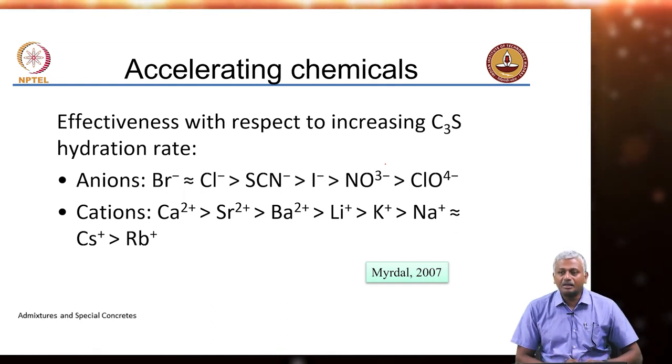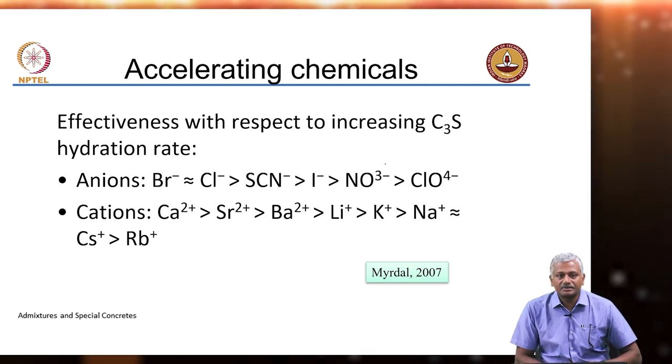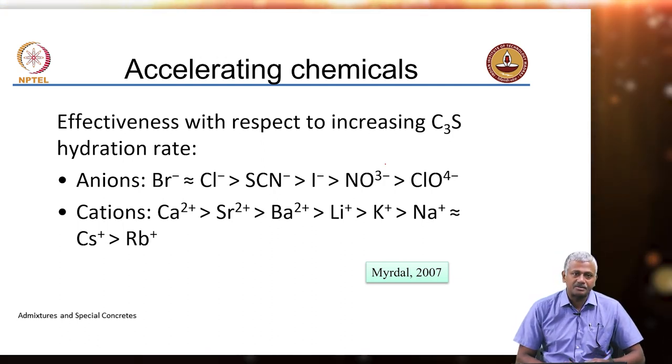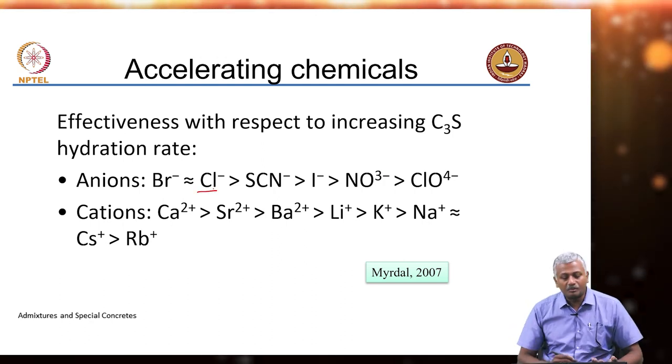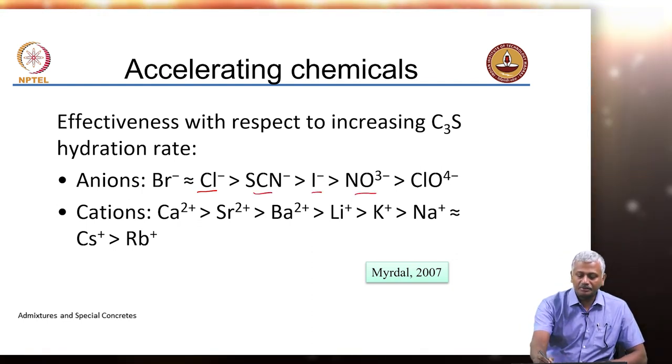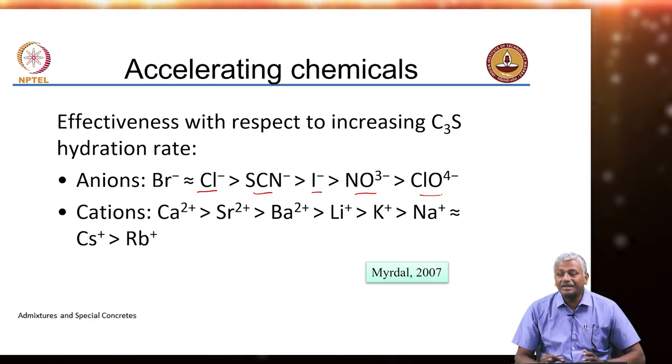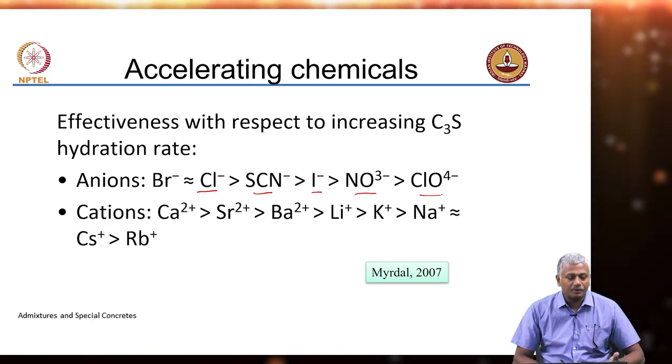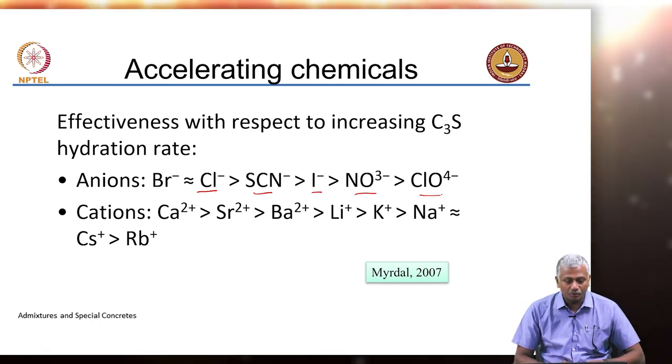Just to give some idea about the effectiveness with respect to increasing the hydration rate of tricalcium silicate, this is basic studies done with different species of accelerating compounds. Among the anionic species, the chloride is the best, even bromides are good but lot more expensive. Then you have thiocyanate, iodide, nitrate, chlorate. So that is the decreasing order in which you have the effectiveness. Chlorides are most effective. For cations, calcium bearing cations are the best, then strontium, barium, lithium, sodium, potassium, cesium and rubidium.